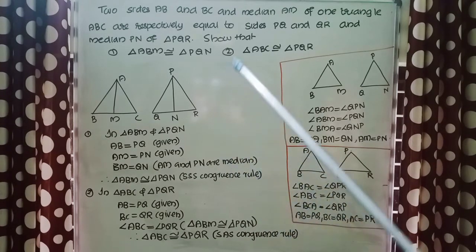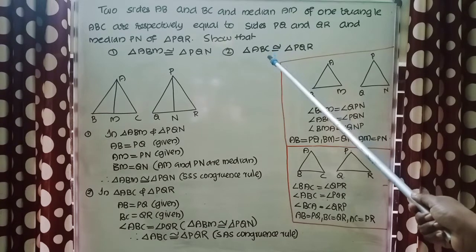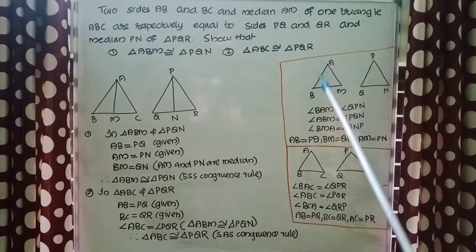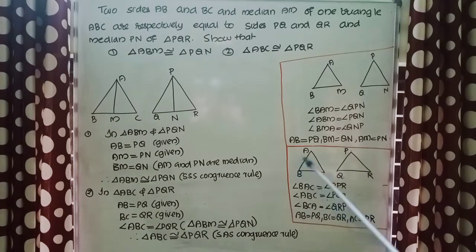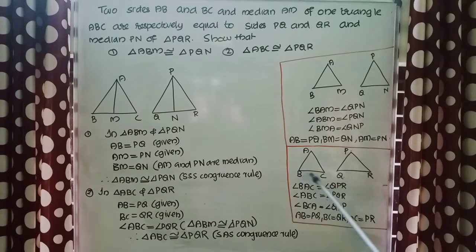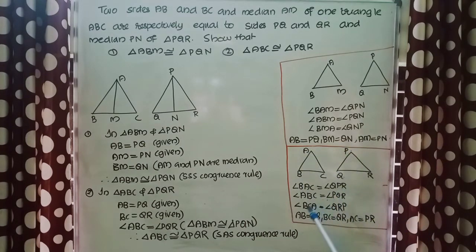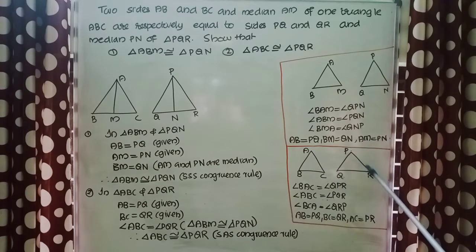Now our second question is to prove triangle ABC congruent to triangle PQR. I have drawn two triangles and named them ABC and PQR. The corresponding angles are: angle BAC equals angle QPR, angle ABC equals angle PQR, and angle BCA equals angle QRP. The sides are: AB equals PQ, BC equals QR, and AC equals PR.